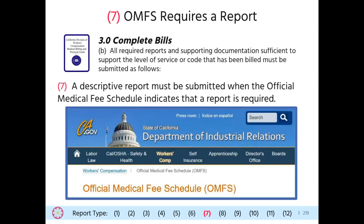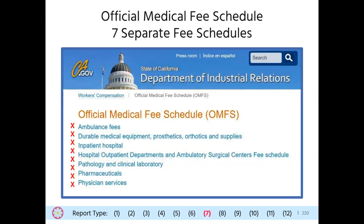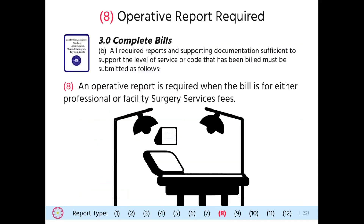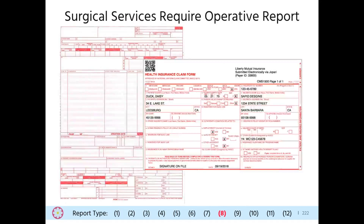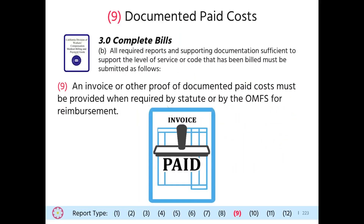The seventh report requirement is when a report must be submitted because the fee schedule requires it — we were unable to find an example in any of the seven fee schedules, but please let us know if you have. The eighth report requirement is for surgical procedures: you must send an operative note with both the facility billing and the professional billing for all surgery services. The ninth requirement is documentation of paid costs, required only when mandated by the applicable fee schedule or a labor code statute.